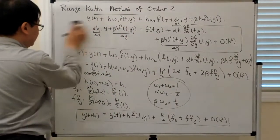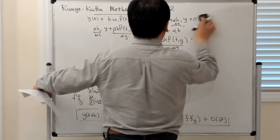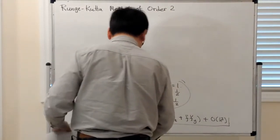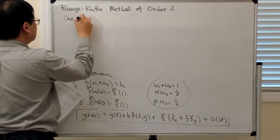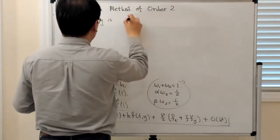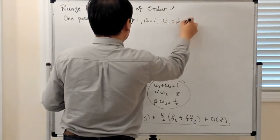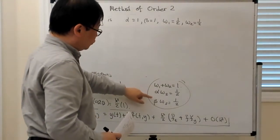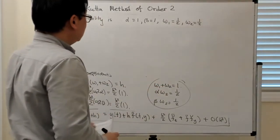There is more than one possibility — more than one numerical method of this form that is second-order accurate. One possibility is α = 1, β = 1, w1 = 1/2, w2 = 1/2. You can easily verify this satisfies all three conditions on the coefficients.